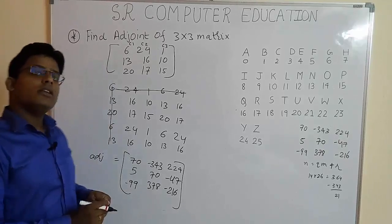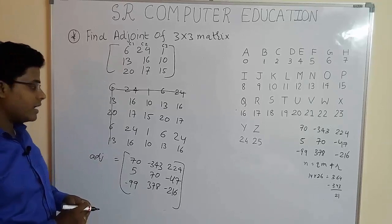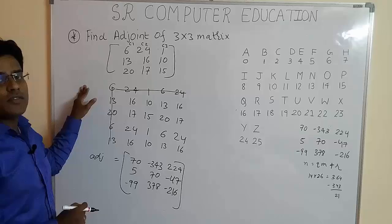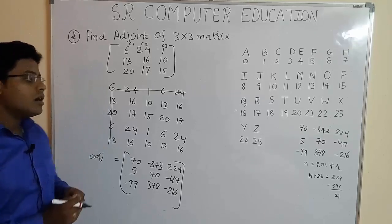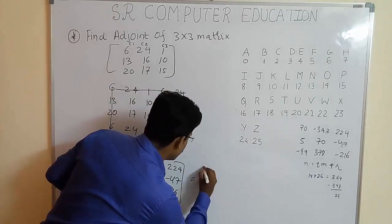Now, student, you will find this kind of adjoint of 3 cross 3 matrices. Now, in Hill cipher, we know that our operation is in mode 26. So, what we have to do here?